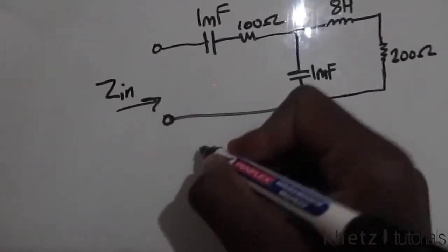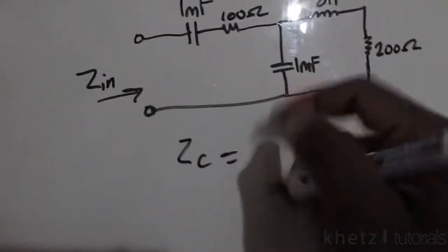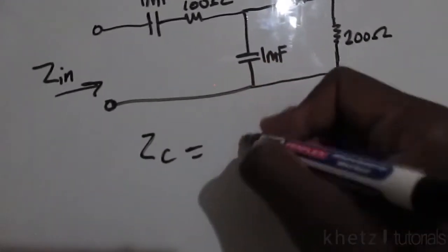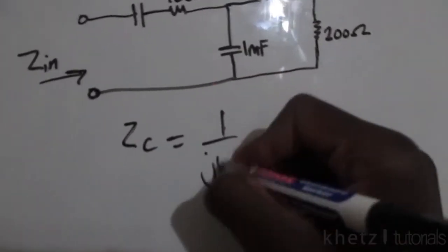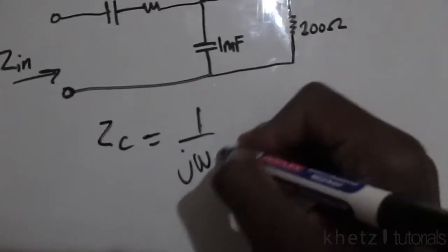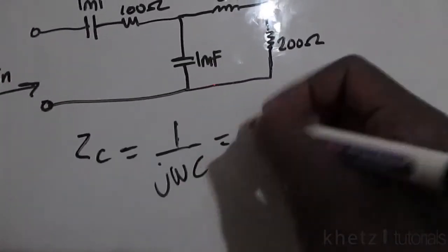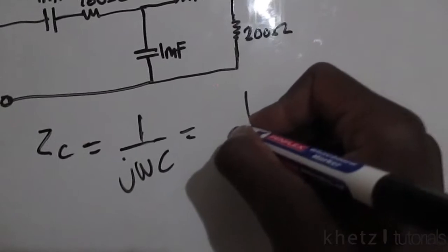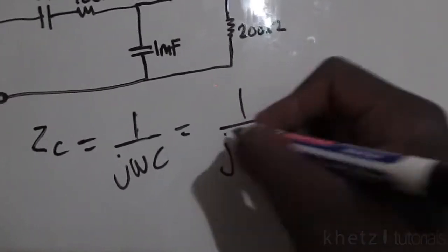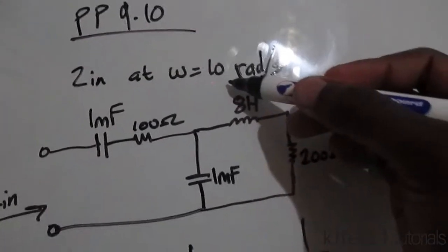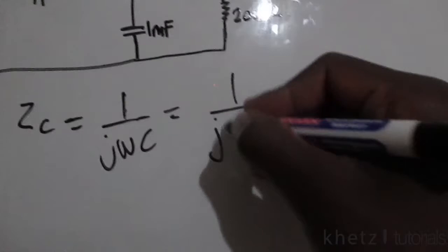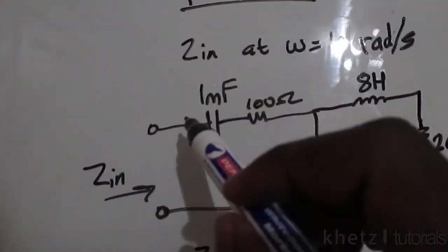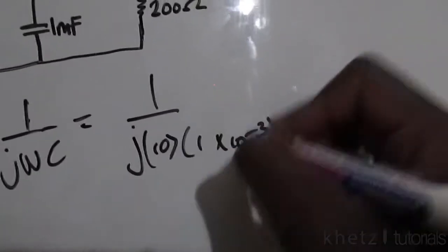To transform a capacitor into its equivalent impedance, you use the formula 1 divided by jωC. So we have 1 divided by j times omega, which is given as 10, and the capacitance — both capacitors are 1 millifarad, so 1 times 10 to the minus 3.